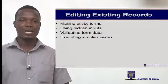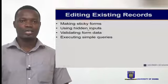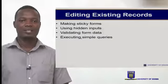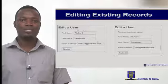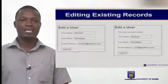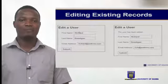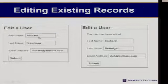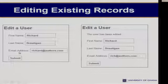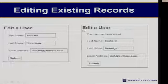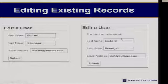The next thing we want to look at is editing existing records. Here we'll be making use of what we call sticky forms. We'll also be using hidden inputs, validating the form data, and executing the simple queries. Sticky inputs are inputs that keep displaying data as and when forms are submitted. So let's say this is the edit form — you realize it's pre-populated with the data already installed. The first name of the user is Richard, the last name is there, and then the email address. Upon submission of this form, if we edit the user's detail, we'd want to reprint the edited one so we know the previous values and the new value.